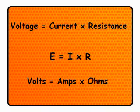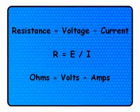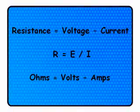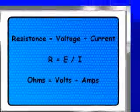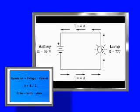Rearranging the formula again gives a formula for resistance. Resistance equals voltage divided by current, or you could say that ohms equals volts divided by amps. This formula will let you calculate the resistance of something if you know the voltage across it and the current flowing through it.